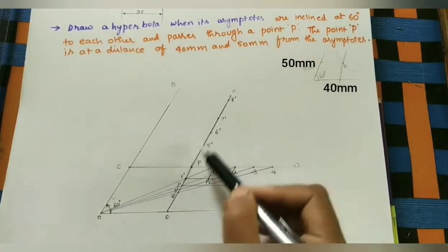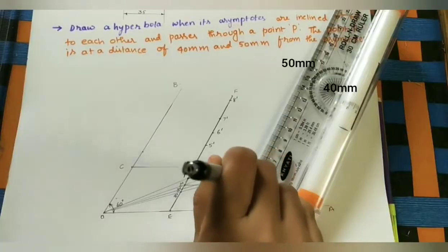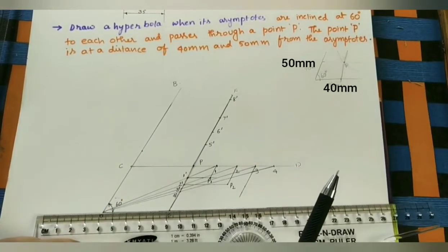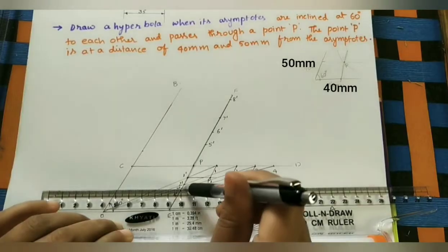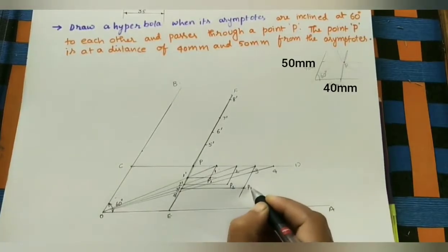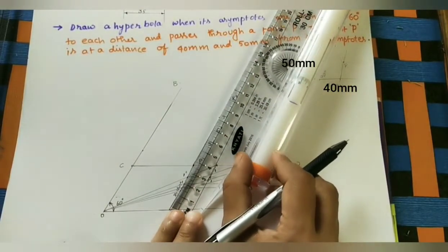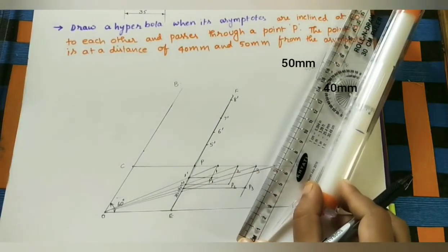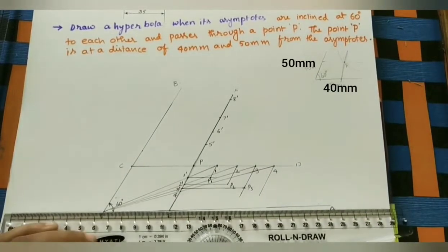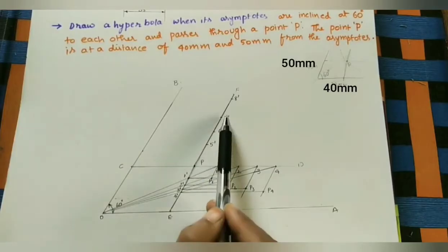Similarly, at point 3 draw a line parallel to this asymptote, and at 3' draw a line parallel to the other. Take the intersection point P3. Then at point 4 draw a line parallel to this asymptote, and at 4' draw a horizontal line to get the intersection point P4.